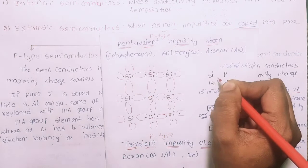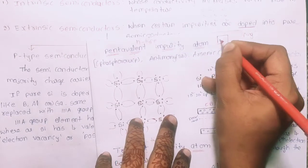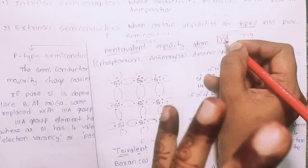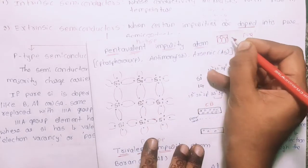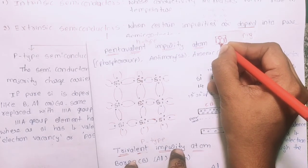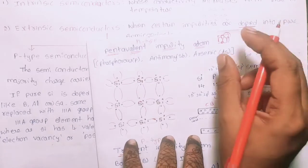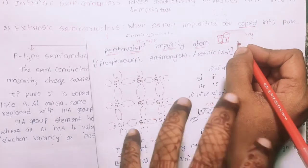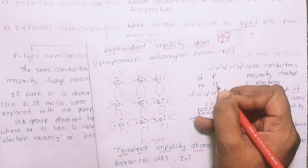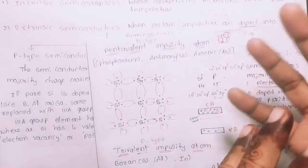Phosphorus has nearly the same atomic size as silicon, so it fits well in the crystal lattice. Silicon has atomic number 14, and phosphorus has atomic number 15 — they are nearly equal. Antimony has atomic number 51 and arsenic has atomic number 33, which are larger, creating a bigger gap. So phosphorus is the closest match to silicon.